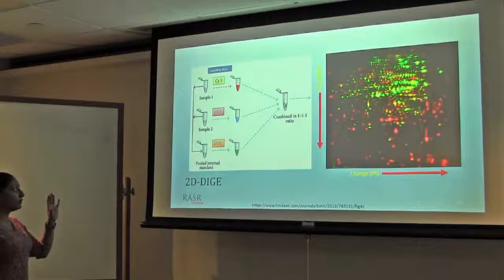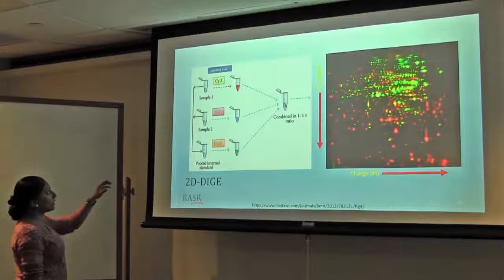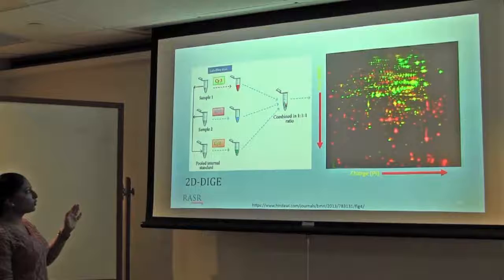Now the advantage is you can label two different samples with two different variations of this dye and mix them together. Also, you can use a one-to-one mixture of both samples and use it as an internal standard by labeling it with another dye or another variation. Combine everything together in one-to-one ratio and then run in the same way like we do 2D gel electrophoresis.